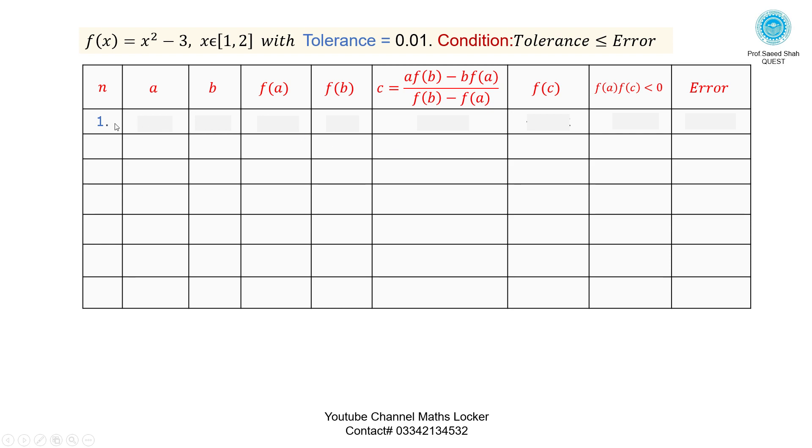First iteration: A equals 1, B equals 2, F of A equals negative 2, F of B equals 1, C equals 1.6666, F of C equals negative 0.2222. Check the product: F of A negative, F of C negative, product positive. It means root doesn't lie in interval A, C. It must lie in interval C, B, so update A equal to C.